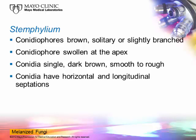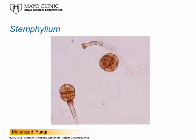Stemphylium will show us another example of a geniculate conidiophore. The conidiophores are brown, single or slightly branched, and the conidia are single, dark brown, smooth to rough, with horizontal and longitudinal septations. Someone described this organism as looking like a bale of hay on a long stalk. You can see a conidiophore with a big spore that has very obvious horizontal and longitudinal septations. The lower left cell is resting on top of a conidiophore that is swollen at the very tip. That is Stemphylium.